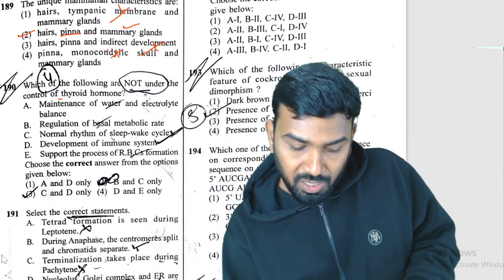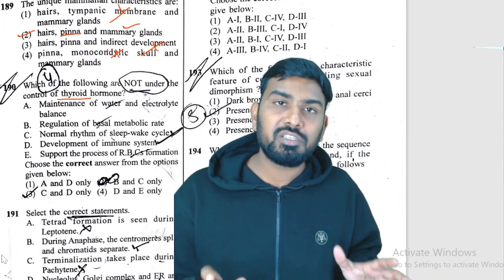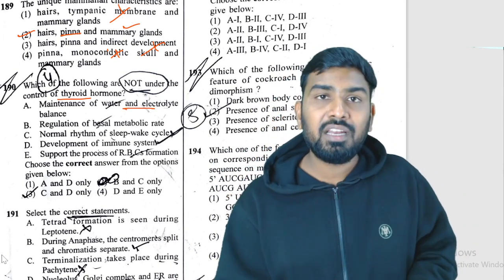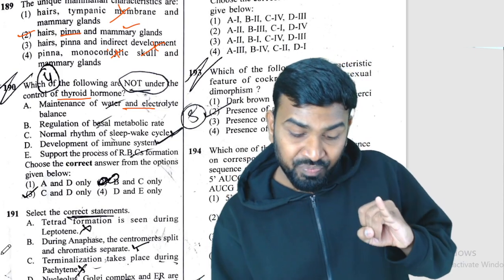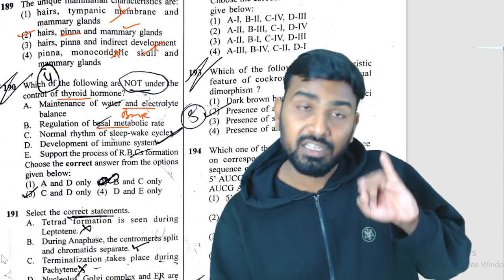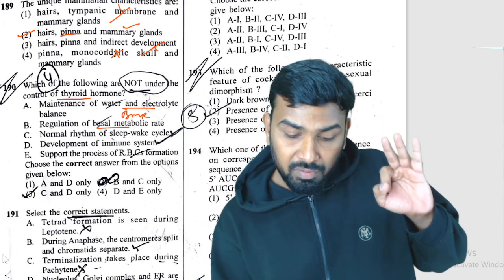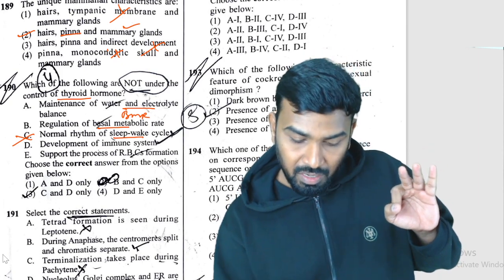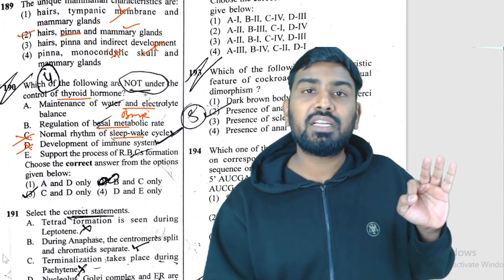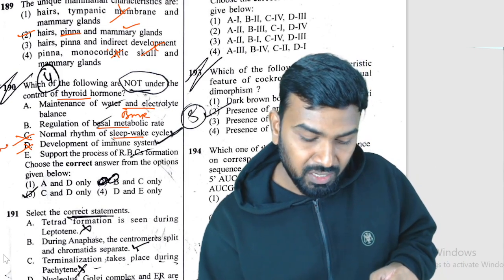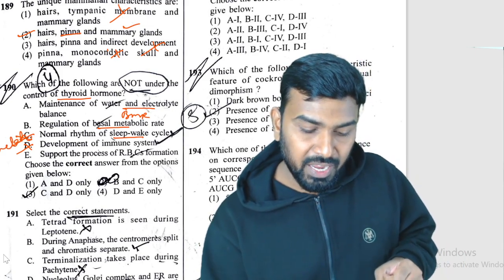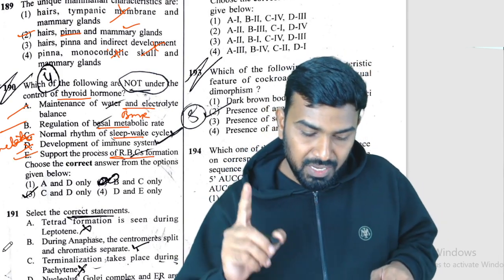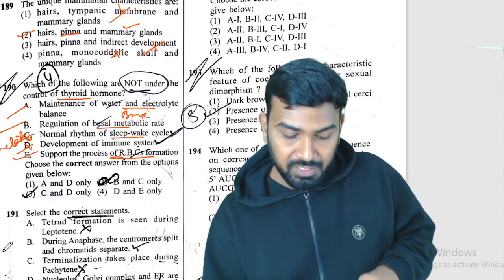Question 190: which function is NOT under control of the thyroid? Water and electrolyte balance — thyroid controls this. Regulation of BMR (basal metabolic rate) — thyroid controls this. Sleep-wake cycle — NOT under thyroid control; it is under melatonin control. Immune system development — also NOT under thyroid control. RBC formation — thyroid controls this. So functions NOT under thyroid: sleep-wake cycle (C) and immune system development (D).